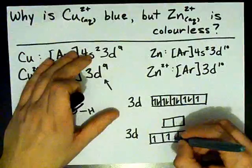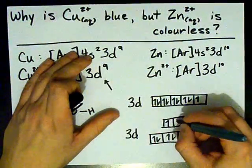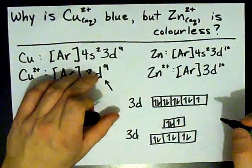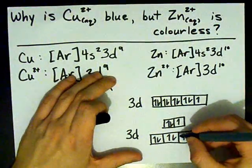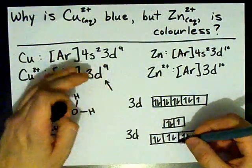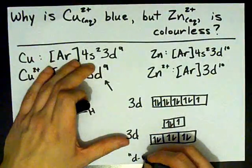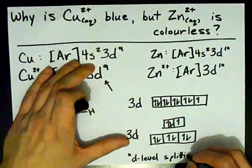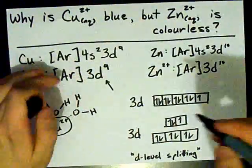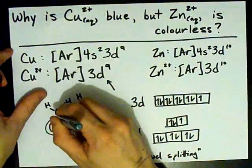9 electrons still. But notice, we now have a difference in energy between the two. This is called d-level splitting. And again, it only happens for metal ions when ligands are attaching to them.